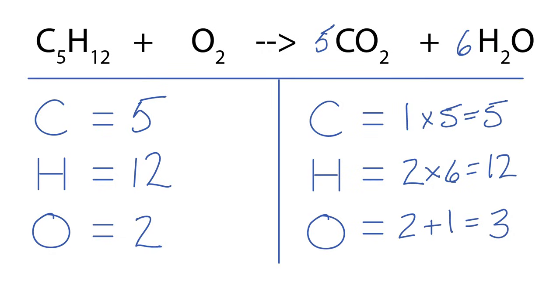For the oxygens, let's re-add those up. Let's re-tabulate now that we have coefficients in front of the carbon dioxide and water. So here I have 5 times 2, 10, plus 6 times the 1, 6, giving me a total of 16 oxygens here on the product side.